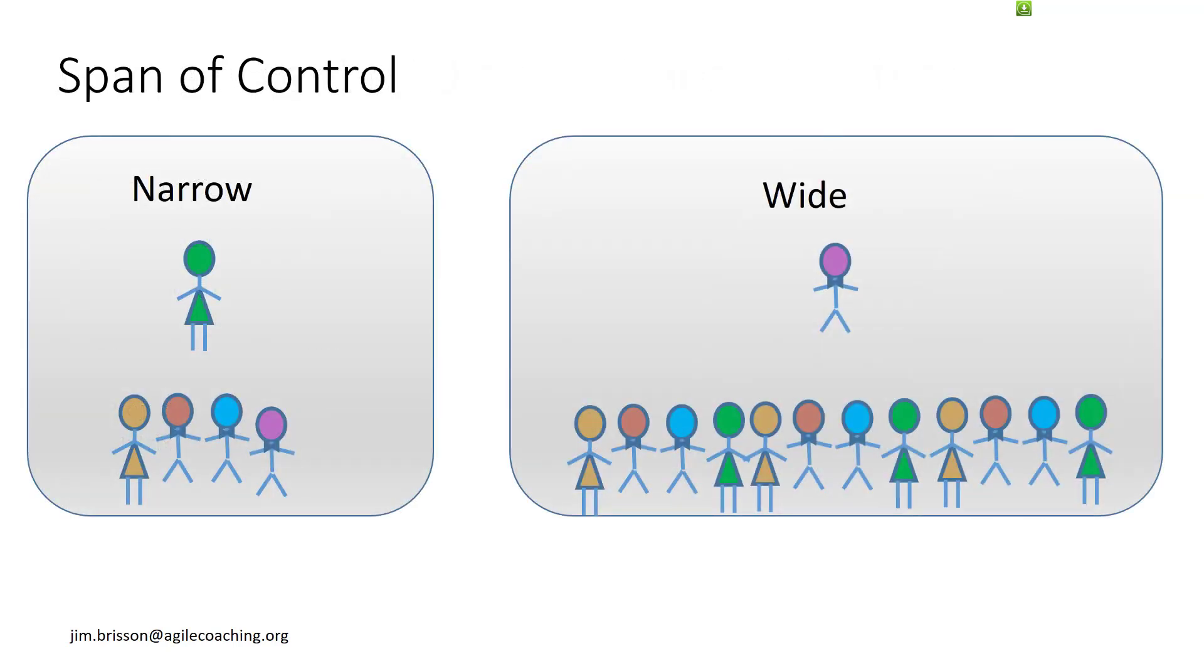Narrow span of control indicates that fewer employees are controlled by one manager. In this example, Green Girl can exercise more control and more interference because she manages fewer people than does Purple Guy. And more autonomous organizations have wider span of control.